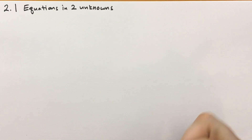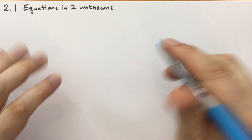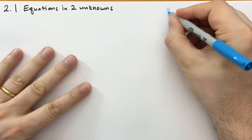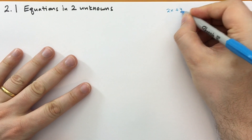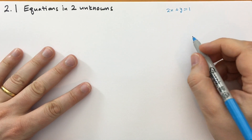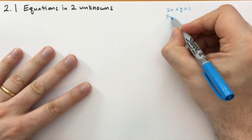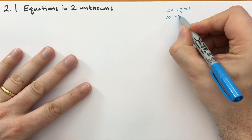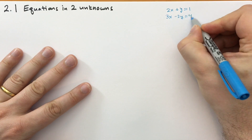Suppose you have two equations. One is 2x plus y is equal to 1. And the other equation says 3x minus 2y is equal to 4.